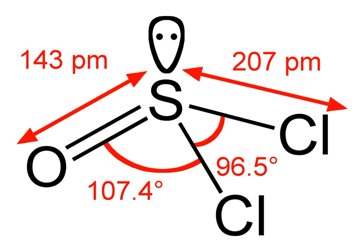SOCl2 is a reactive compound that can violently release dangerous gases upon contact with water and other reagents. It is also controlled under the Chemical Weapons Convention and listed as a Schedule III substance since it is used in the DD method of producing G-series nerve agents.